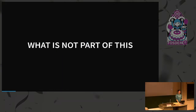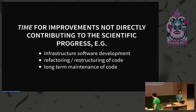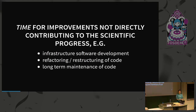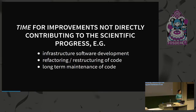So, differences between software development in business versus science. In science, since publications are the currency, people usually have a time constraint for software development. Whatever software development is done is typically targeted directly at scientific outcomes — plots for paper publications and so on. There's not really time for developing extensive infrastructure or for restructuring and refactoring code to make it nicer and more maintainable in the future.